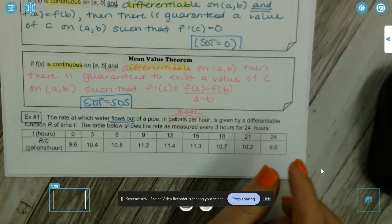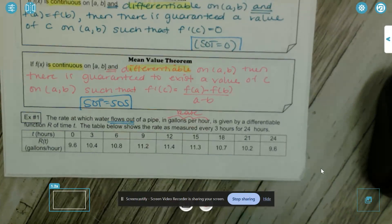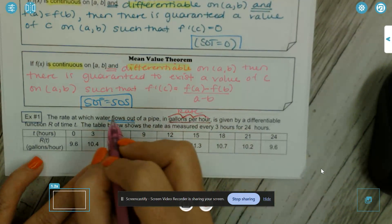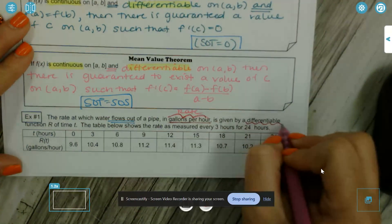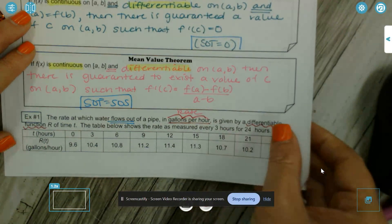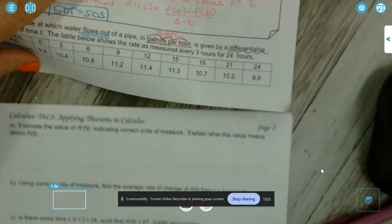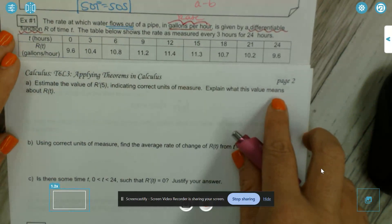Example one: the rate at which water flows out of a pipe in gallons per hour is given by a differentiable function r of time t. The table shows the rate as measured every three hours for 24 hours. Gallons per hour is our rate here. It does tell us it's given by a differentiable function r of t, and we'll use this table of values to answer all of the questions on example one.